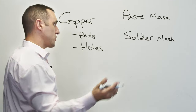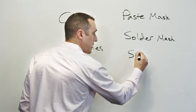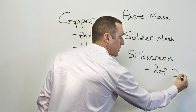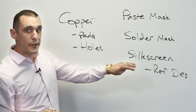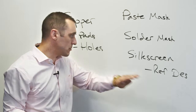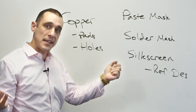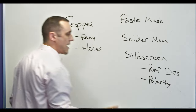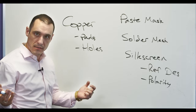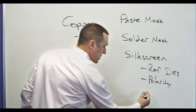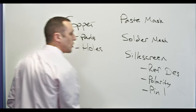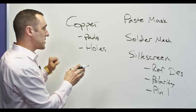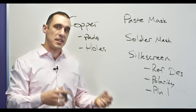The next minimum layers you need are the silkscreen layers. At minimum, you just need to have the reference designator in your silkscreen layer. You're not required to have component outlines, but you do need a reference designator. If it's a polarized component like a diode or a polarized capacitor, you should also have a polarity marking. And if it's an integrated circuit with more than two pins, it should have a pin 1 marking. This is the minimum amount of stuff you need in your footprints to make them functional in a PCB layout.